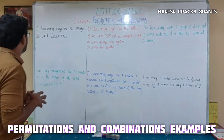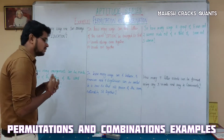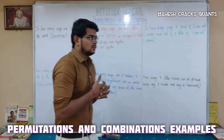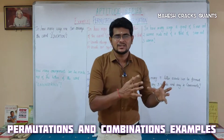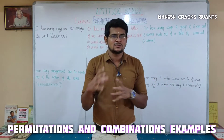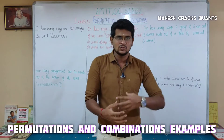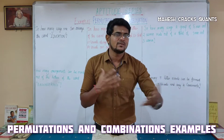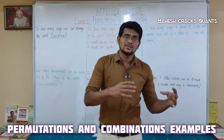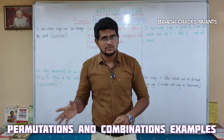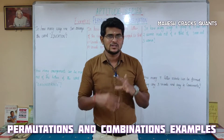The first question: in how many ways can one arrange the word 'education'? If you have 5 letters, you can arrange them in 5-factorial ways. If you have 10 members, you can arrange them in 10-factorial ways. If you have 7 letters, you can arrange them in 7-factorial ways.